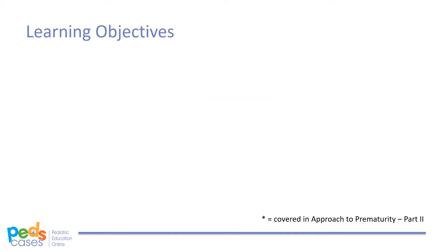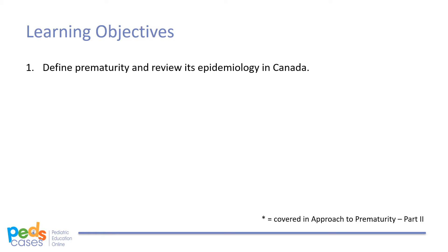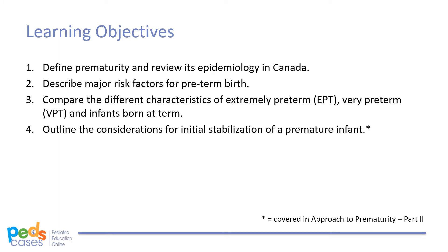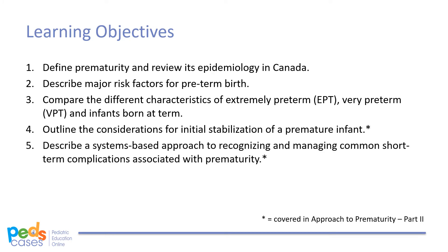By the end of Part 1, we hope that the learner will be able to define prematurity and review its epidemiology in Canada, describe major risk factors for preterm birth, and compare the different characteristics of extremely preterm, very preterm, and infants born at term. In Part 2, we will outline the considerations for initial stabilization of a premature infant and describe a systems-based approach to recognizing and managing common short-term complications associated with prematurity.